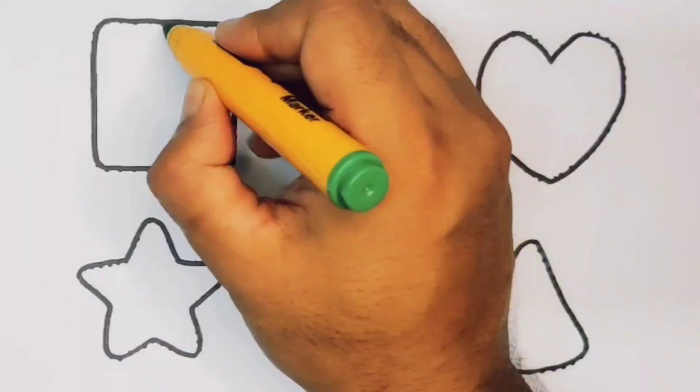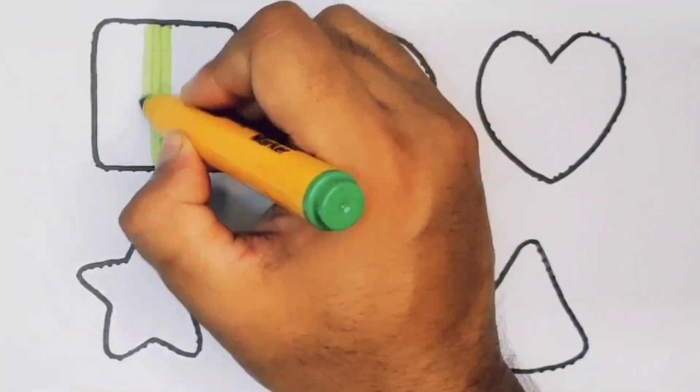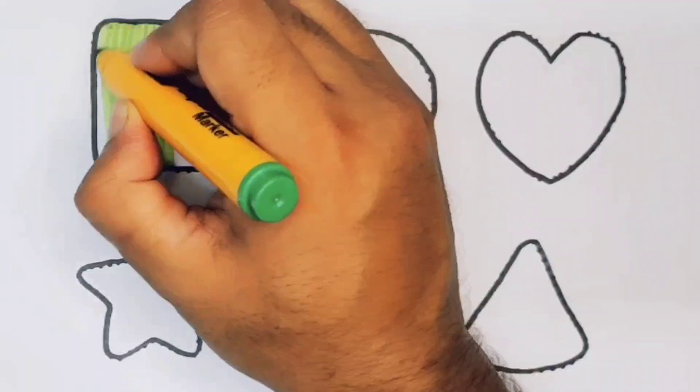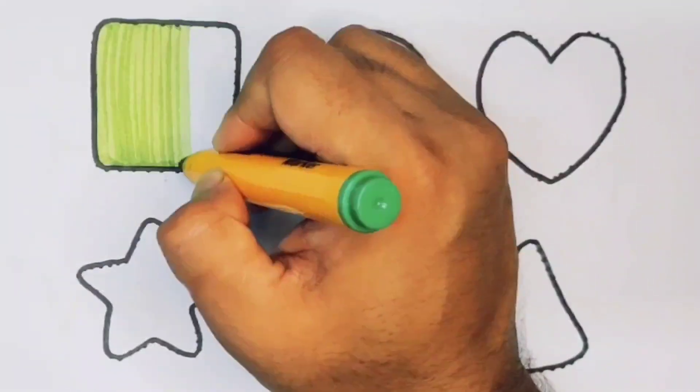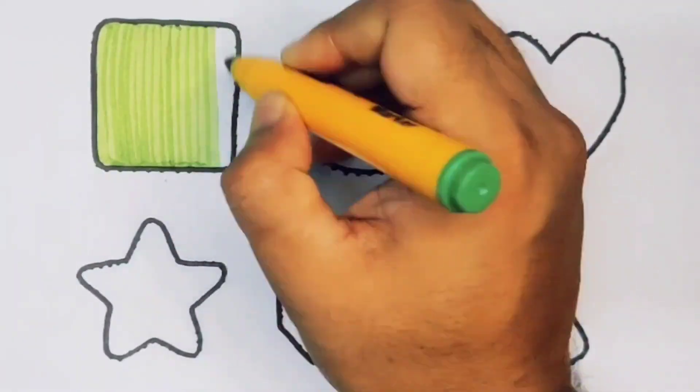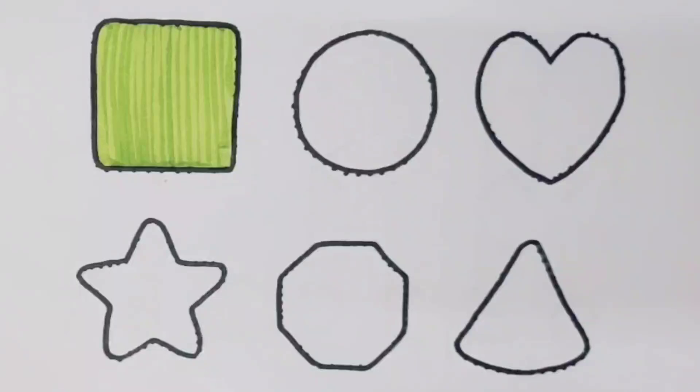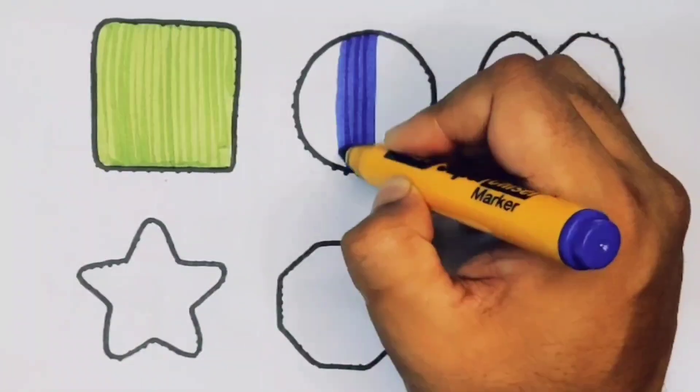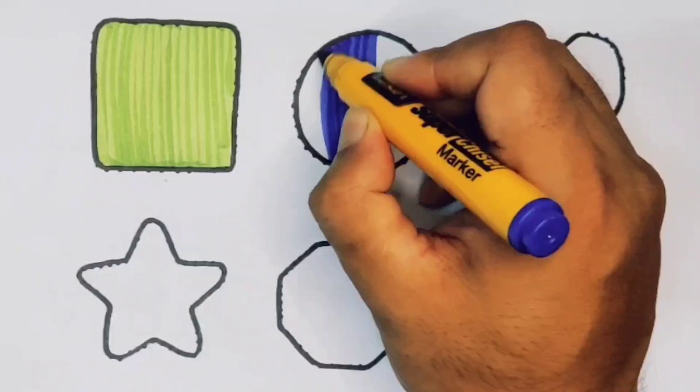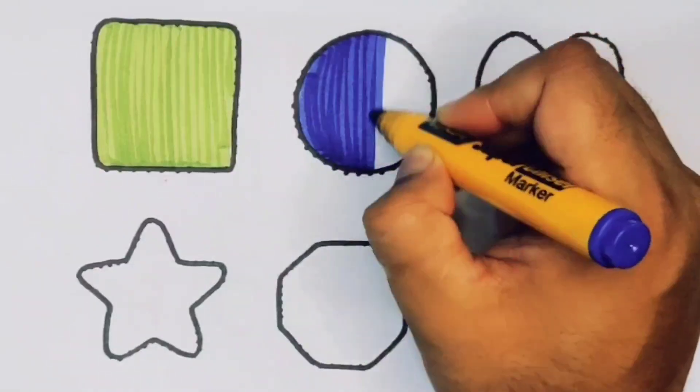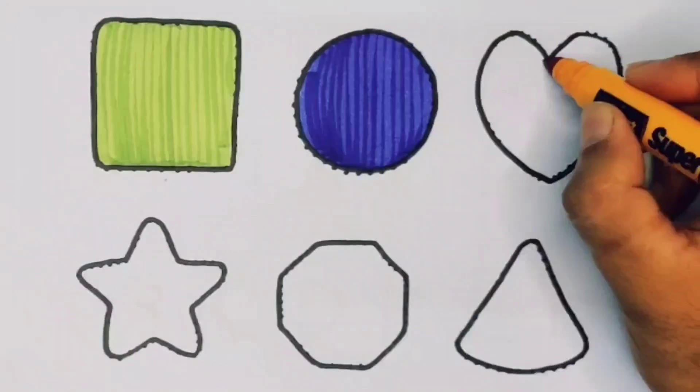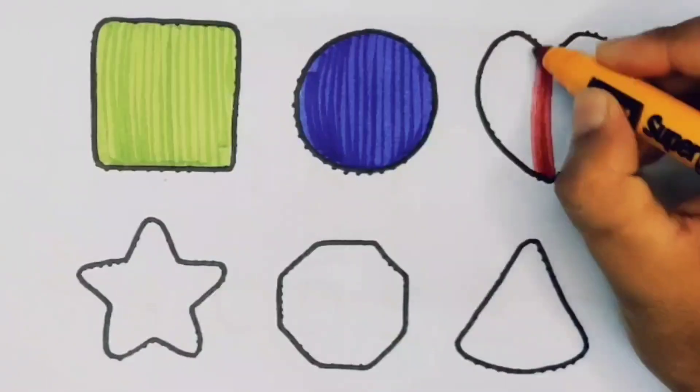Now we're going to put the color. Green color for the square. Next, blue color circle. Next, red color heart.